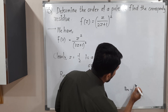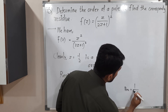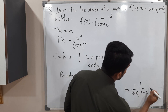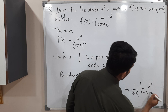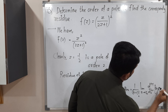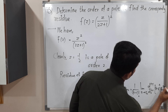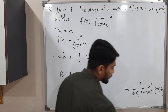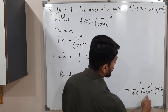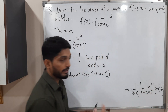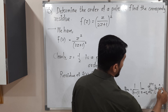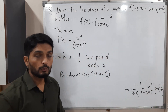The formula for residue is: 1/(n−1)! times the limit as z tends to z₀ of the (n−1)-th derivative of (z − z₀)ⁿ · f(z).